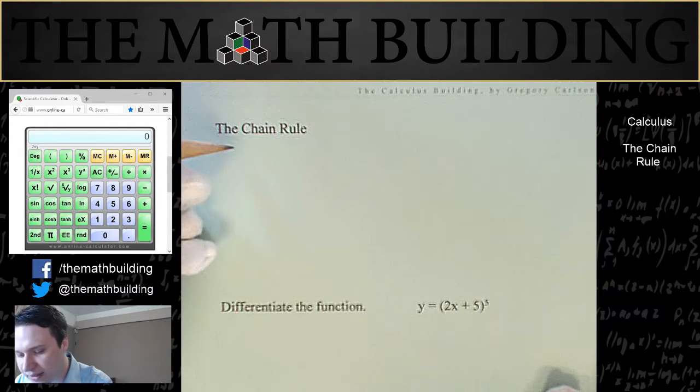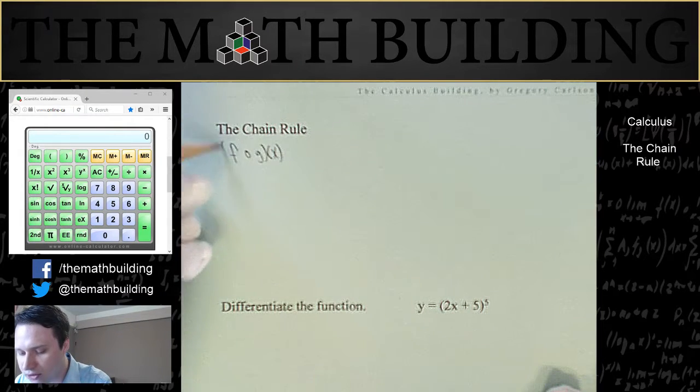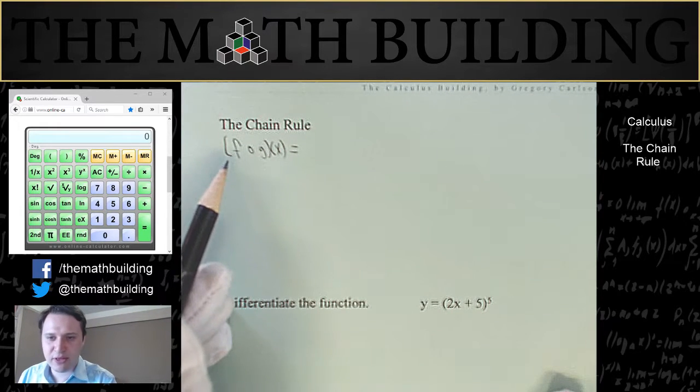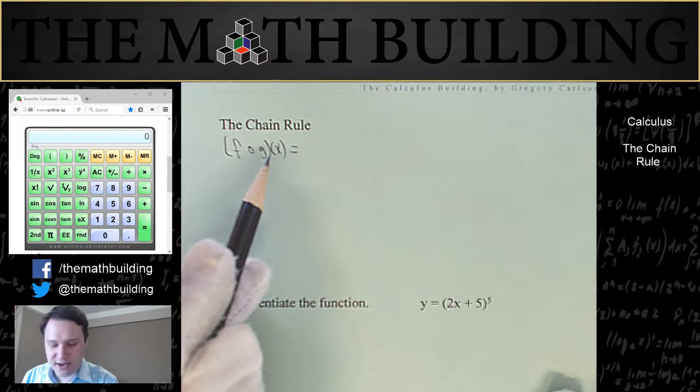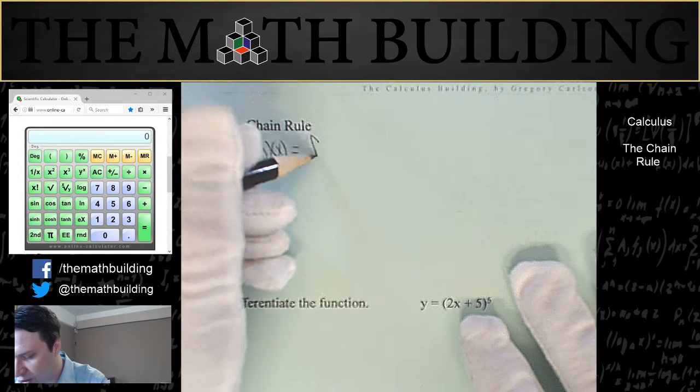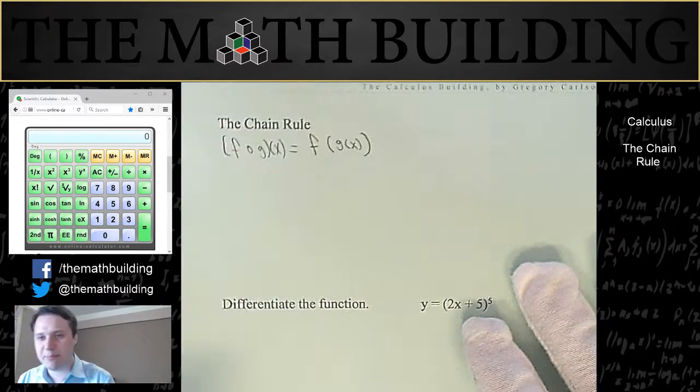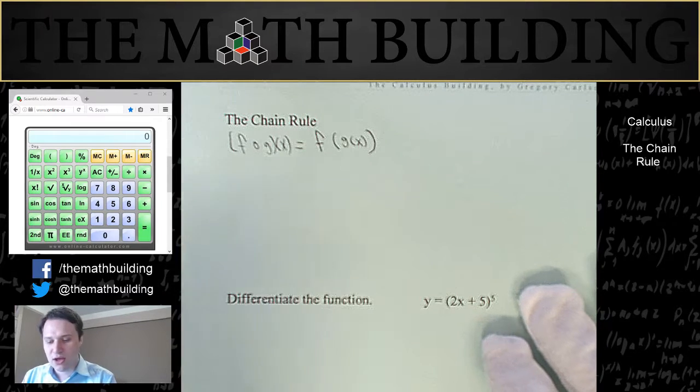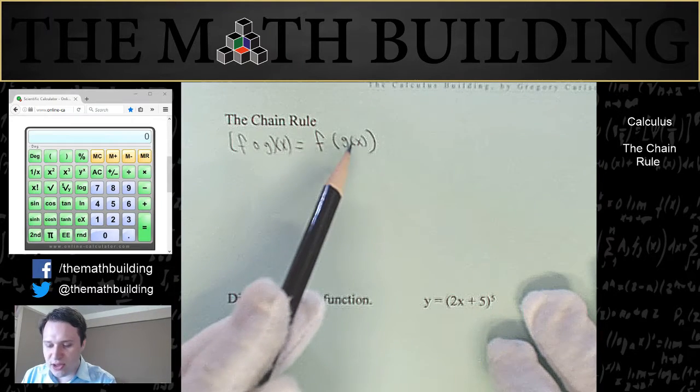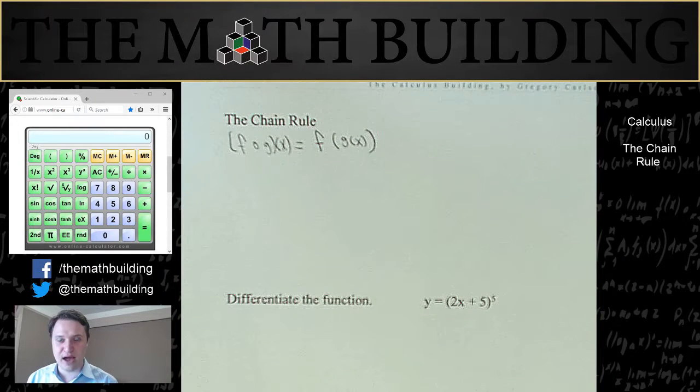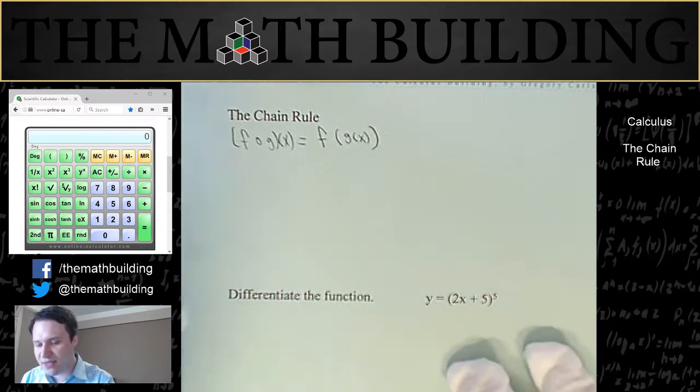So the chain rule is useful when we have a composite function. So let's really quick review for a minute what a composite function is. Remember this, it's f of g of x. And so this is basically when I have a function f, and for the input of that function, I plug in the entire function g. So I evaluate g, I get a value, I plug that into f, and then f gives me a final value. So that's what a composite function is when we've plugged g into f.